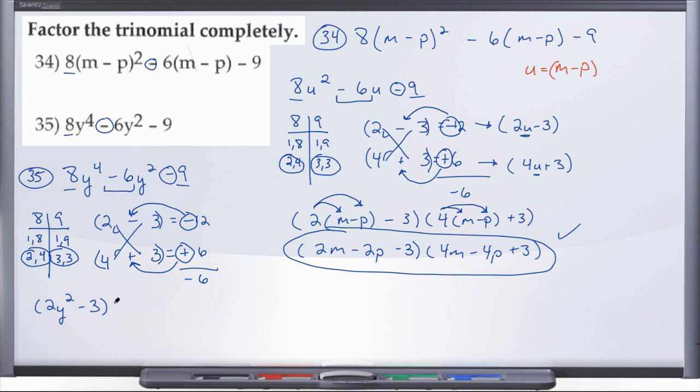So instead of a single y here, now we're going to have y squared and then minus 3. And now we're going to have 4y squared plus 3. And there you have it, the factored form of number 35.